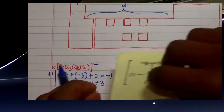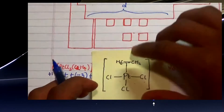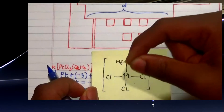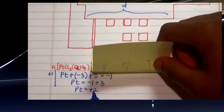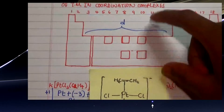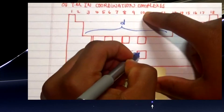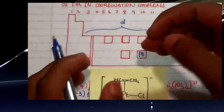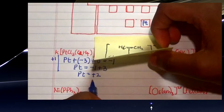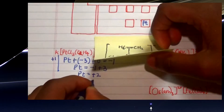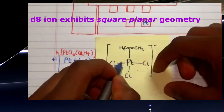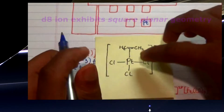Here we can see the geometry of this compound. Platinum is in group ten of the periodic table, so it has ten electrons. Ten minus two electrons lost gives us a d8 electron count. D8 compounds with platinum mostly exhibit square planar geometry, as seen in this structure. That's the first example.